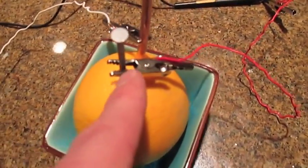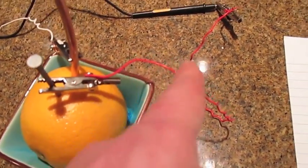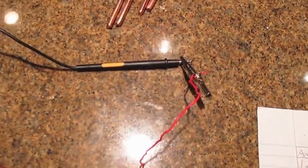So the alligator clips connect to the nail. And then by the wire there's another alligator clip on the end. It connects to the sensor.